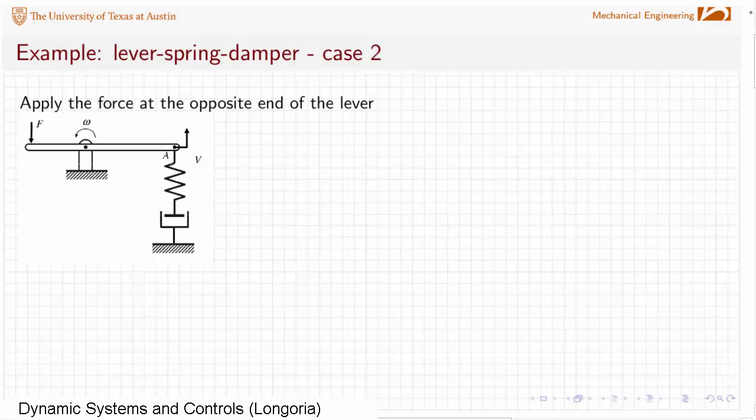In this case, I've taken that lever spring damper system that we just looked at, and the only thing I've done here is I've changed moving the force now. Remember, this is now, let's make it clear that it's an input. How would this change the model for this system?